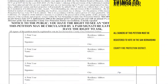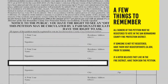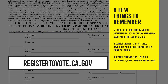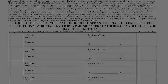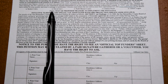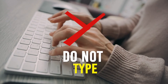Here are some things to remember. All signers of this petition must be registered to vote in the San Bernardino County Fire Protection District. If someone is not yet registered, have them visit registertovote.ca.gov prior to signing. If a voter believes they live in the Fire District, have them sign the petition. Use only black or blue ink, print legibly and neatly, and do not type.